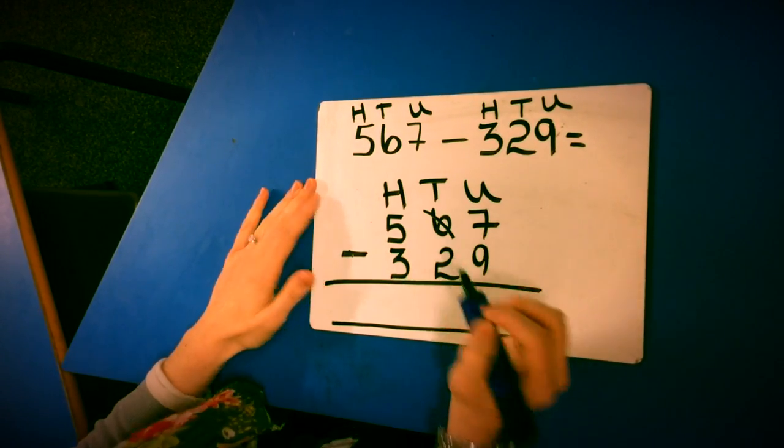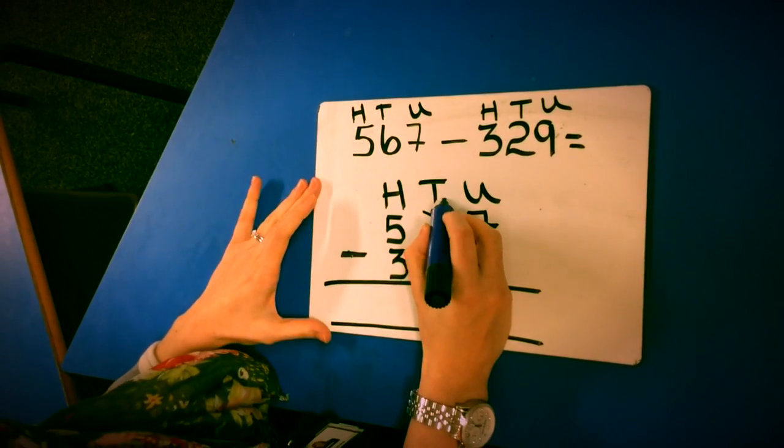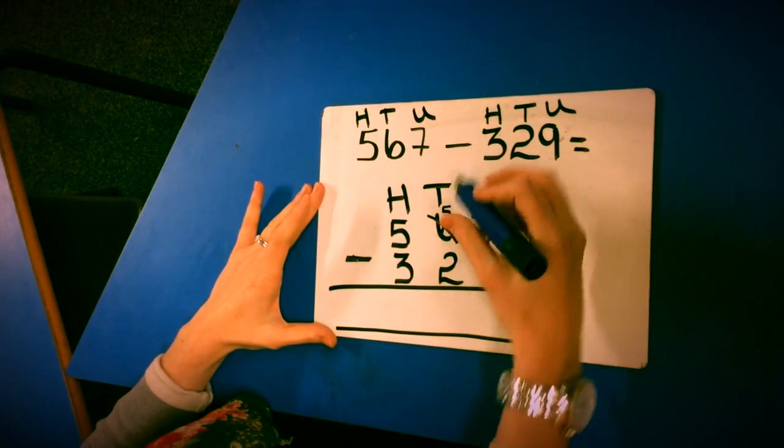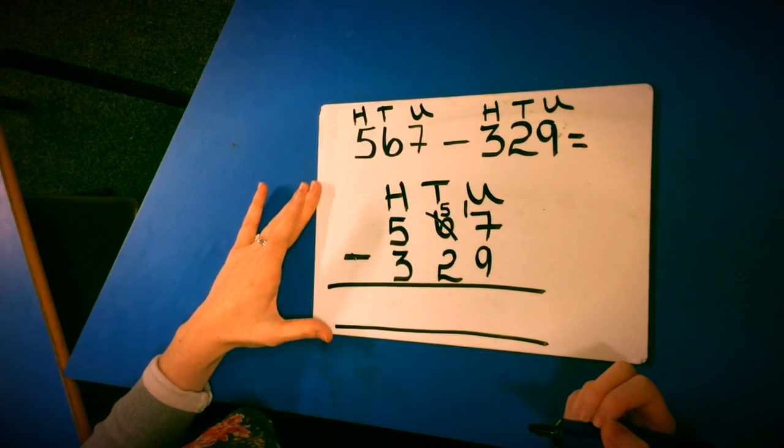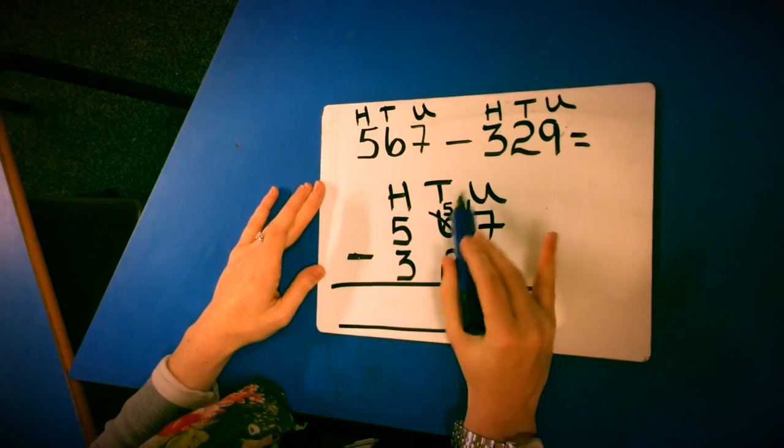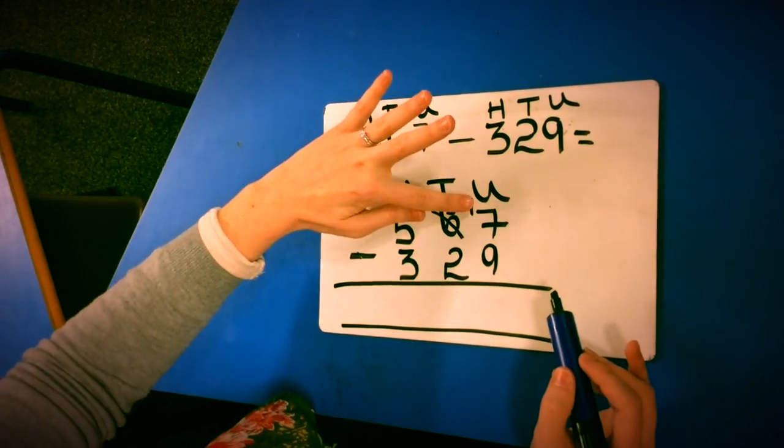So it becomes 5 lots of 10 or 50. And I add that 10 to my units column. I then ask, what does this number become? Well it becomes 17.